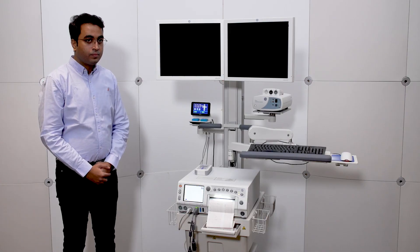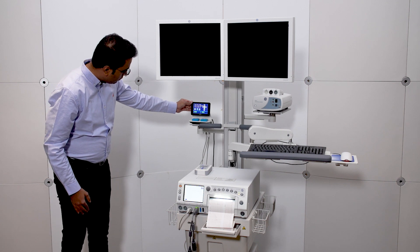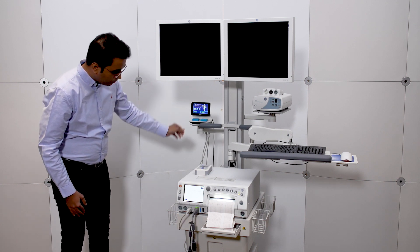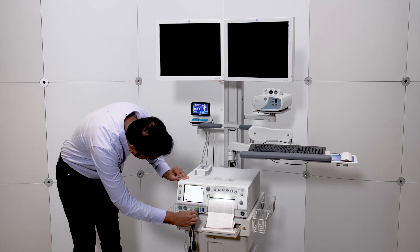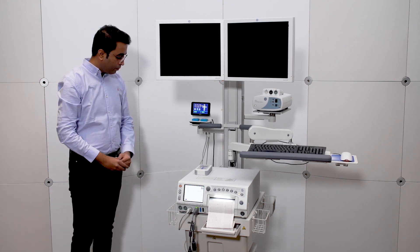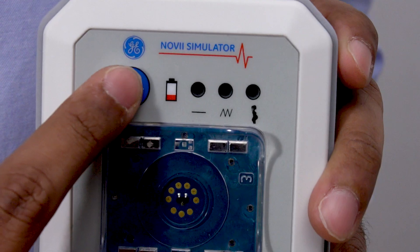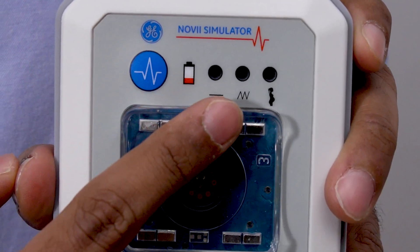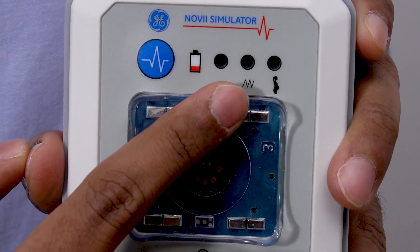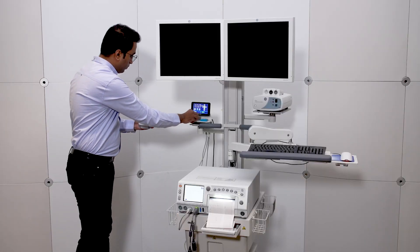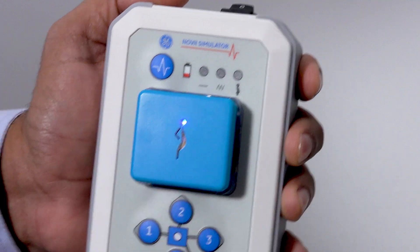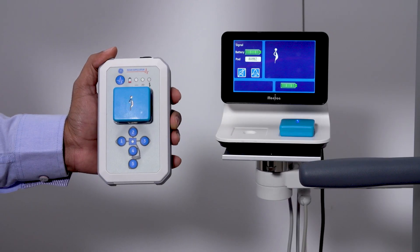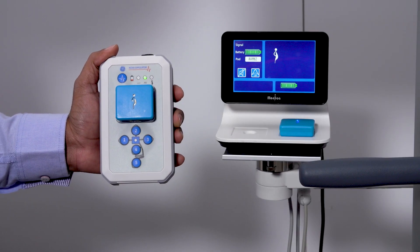Let's try a simulation. First, make sure your Novi interface and Corometrics are connected. Then select the variable mode indicator. Check the light indicator to confirm it has been selected. Take a charged pod from the Novi interface and place it in the simulator pod clip.